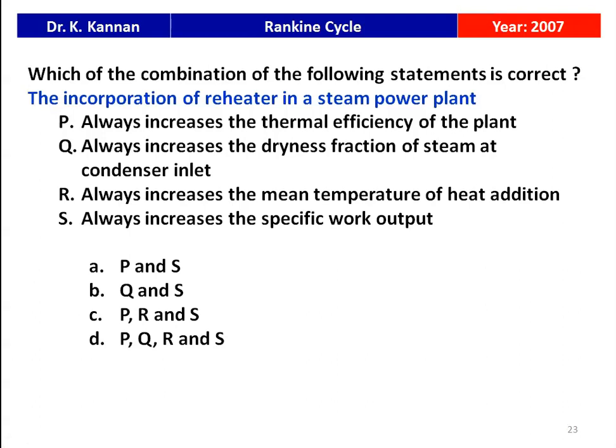Next question from the 2007 question paper: which combination of statements is correct regarding the incorporation of a reheater in a steam power plant? P: always increases thermal efficiency; Q: always increases dryness fraction of steam at the condenser inlet; R: always increases mean temperature of heat addition; S: always increases specific work output. Reheating improves specific work output and there will be a marginal decrease in efficiency. Statements Q and S are correct. The answer is option B.